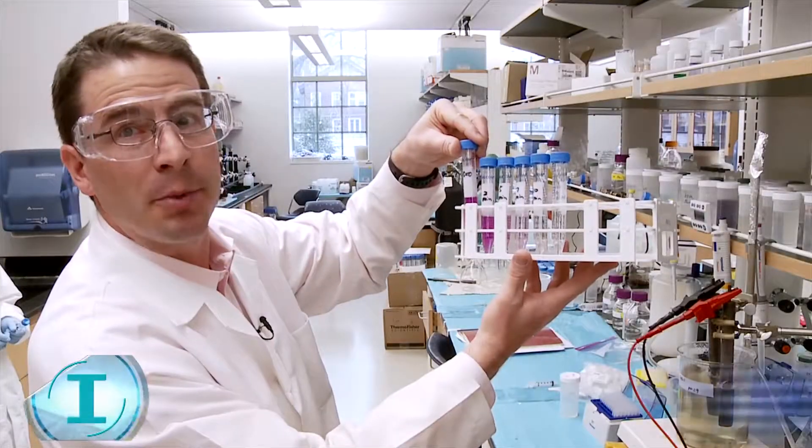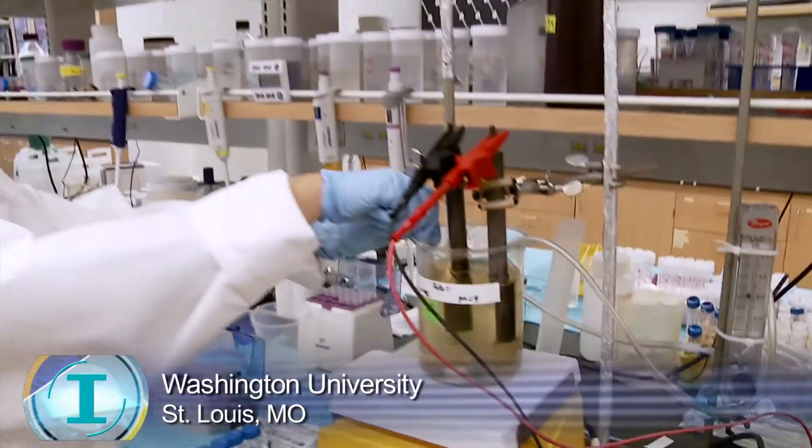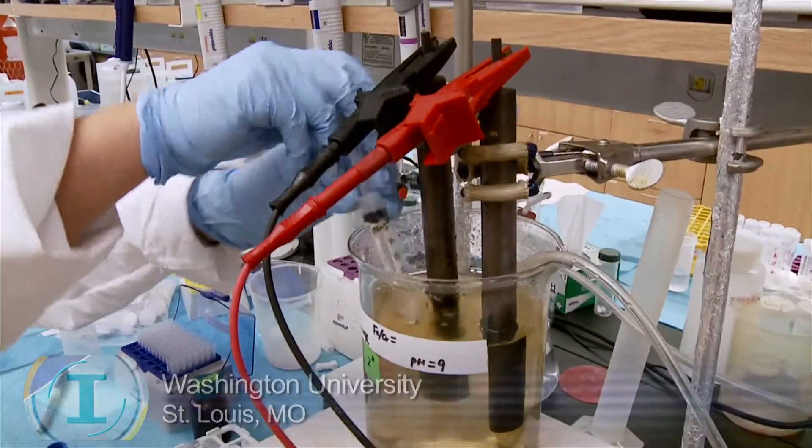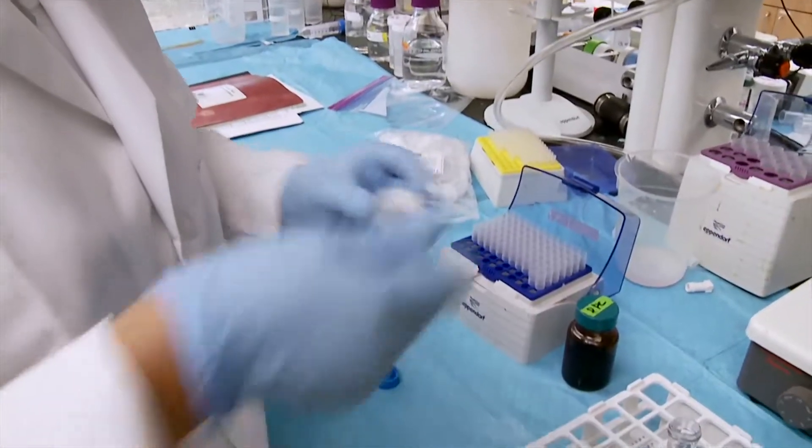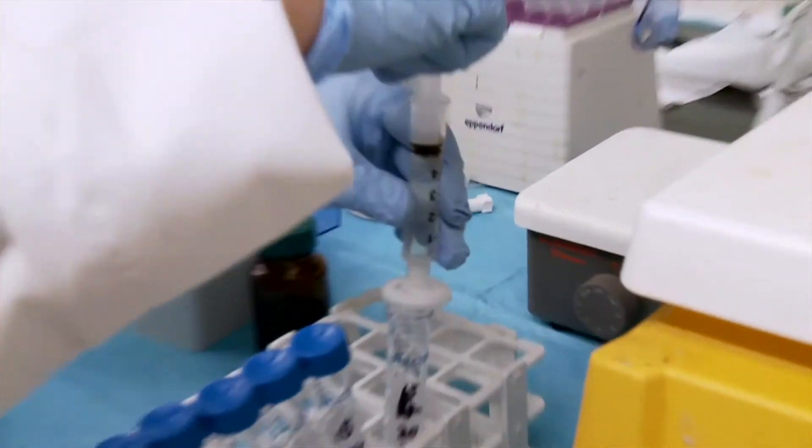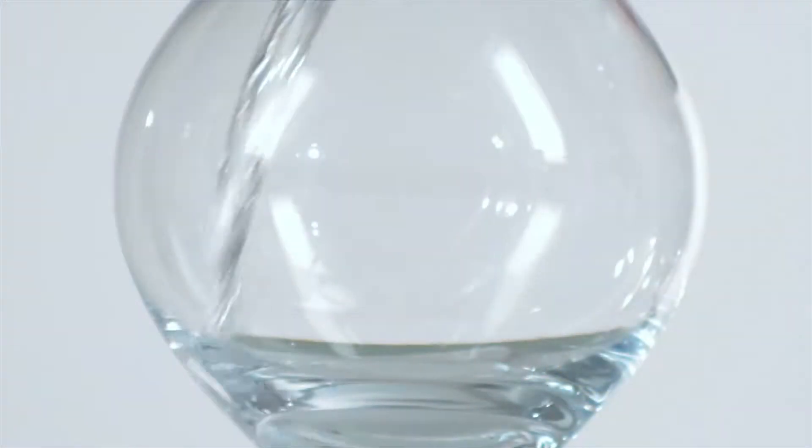Dan Jamar is an environmental engineer at Washington University. His lab is taking up the cause to clean the cancer-causing chromium 6 from groundwater. Inside the School of Engineering and Applied Science, Jamar has an innovation that's making a splash.